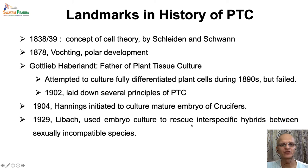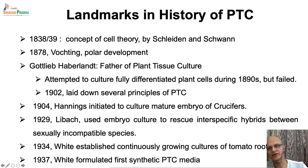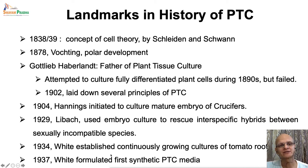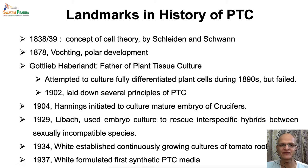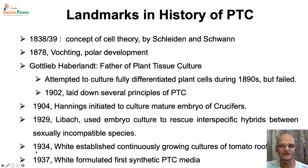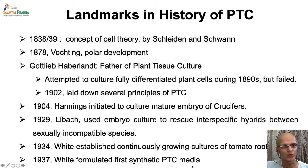In the 1930s, Philip White worked with isolated root cultures, and in 1934 he reported establishing continuously growing cultures of tomato root tips. They were maintained by subculturing onto fresh medium for a longer period of time. In fact, he formulated the first synthetic media for plant tissue culture, which was published in 1937 and named White's Medium. It contained inorganic salts, sugars, and vitamins.